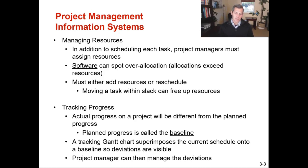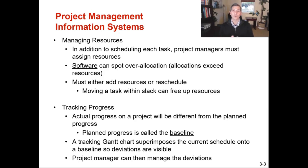One of the best things that project management information systems do is track progress. We've got a baseline. For Milwaukee Paper, the baseline was 16 weeks to complete the project, and we believed it would take 15 weeks. If things are going well, maybe we'll complete it in 14 weeks; if not, we know there are activities we could potentially crash to bring us back on track. A Gantt chart shows the current schedule versus the baseline, and project managers can work to alleviate deviations by managing the team to make sure the project stays on track.